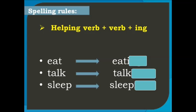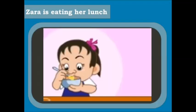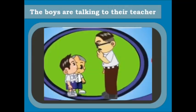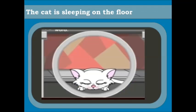Dear students, to form present continuous tense it's good to know some spelling rules. For many verbs, simply add ing to the base verb. For example: eat → eating, talk → talking, sleep → sleeping. For example: Sarah is eating her lunch. The boys are talking to the teacher. The cat is sleeping on the floor.